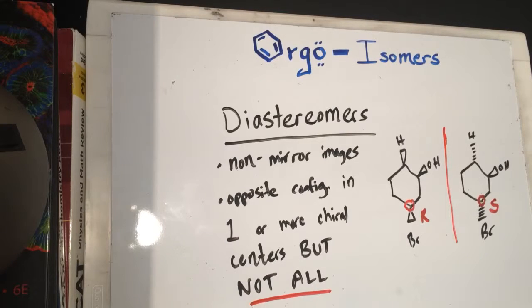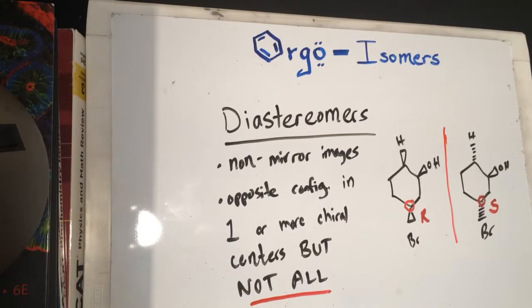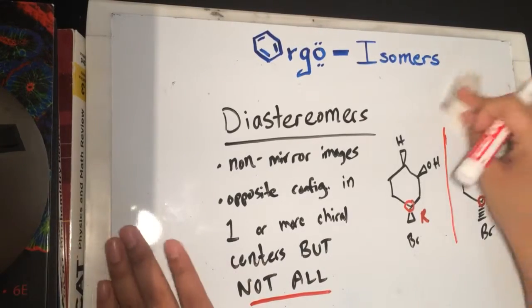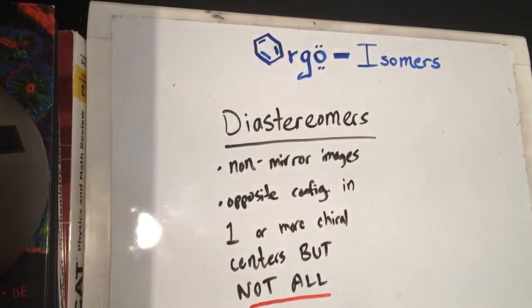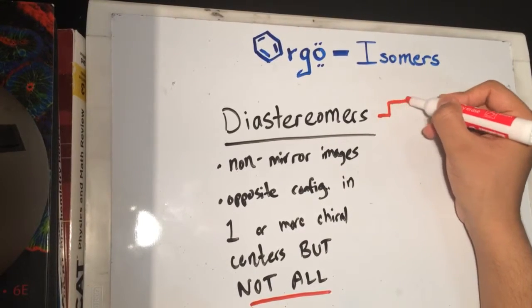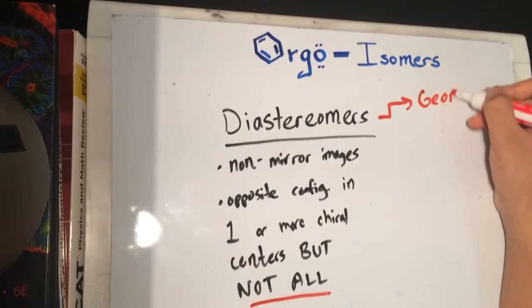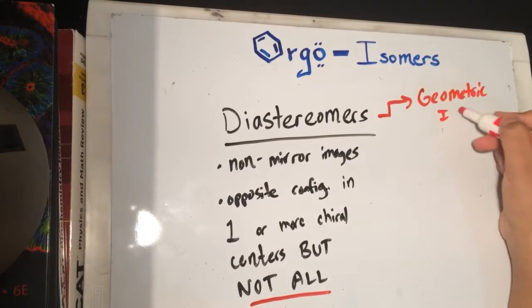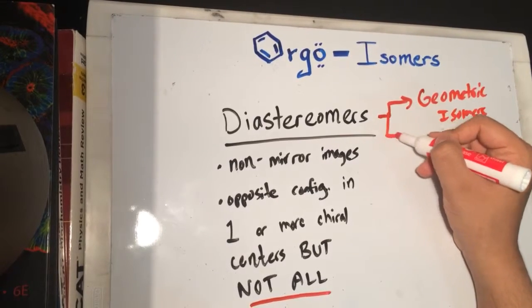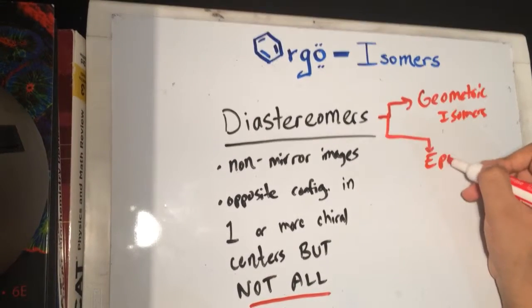Diastereomer is also a broader term. Going back to the flowchart from part one, diastereomers can be divided into two groups: geometric isomers and epimers. So you have geometric isomers and epimers.